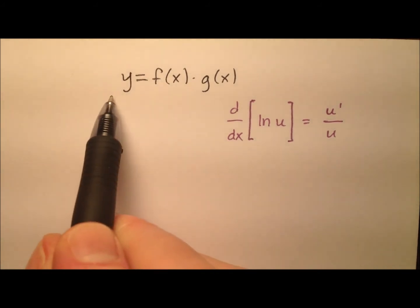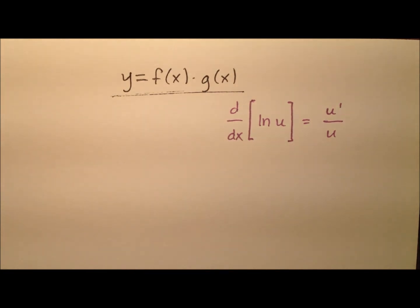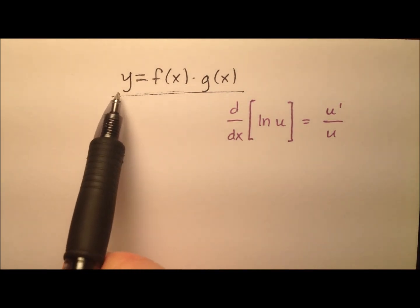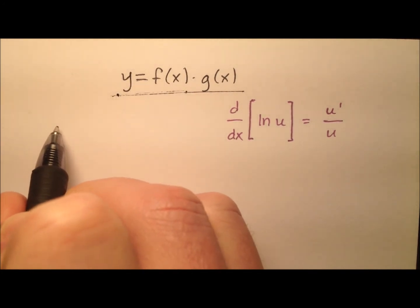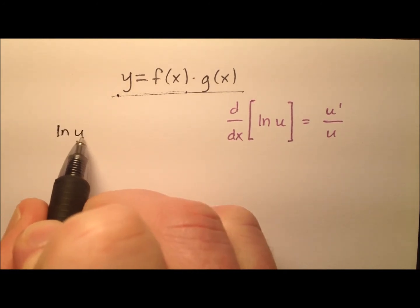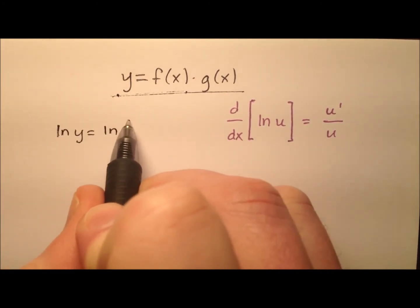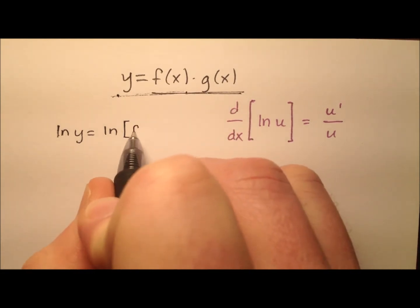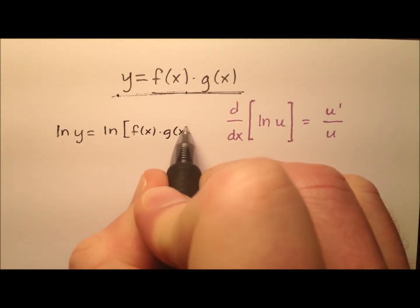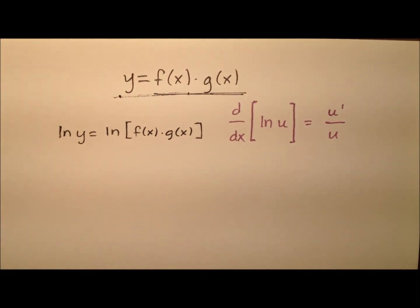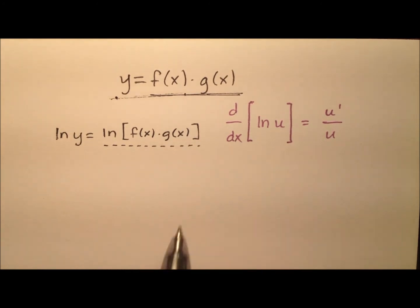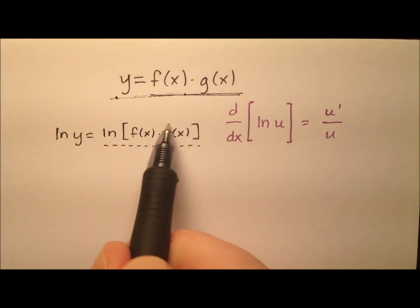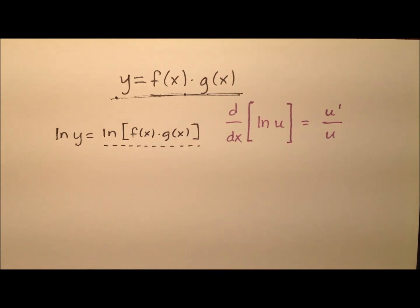So we have this equation, and to use logarithmic differentiation, the first thing I need to do is take the natural log of both sides. So I'll have the natural log of y equals the natural log of f of x times g of x. Now I can use a property of logs — instead of having the natural log of this product, I can expand it into the sum of two distinct natural logs.